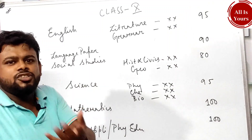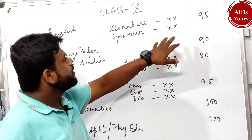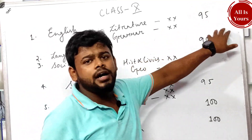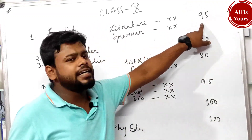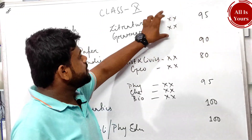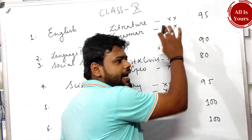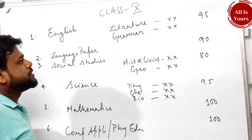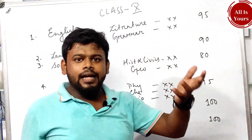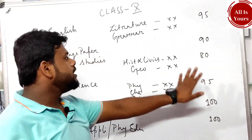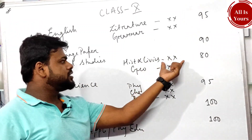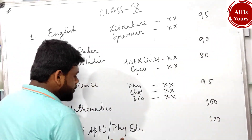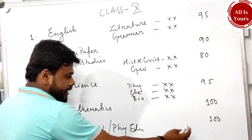Let us assume a student secured in English — both the literature and language/grammar papers are added and an average mark is written on the mark sheet. Suppose the student scored 95 in English, 90 in the language paper, 80 in Social Studies (average of History, Civics, and Geography), 95 in Science, 100 in Mathematics, and 100 in Computer Application or Physical Education.